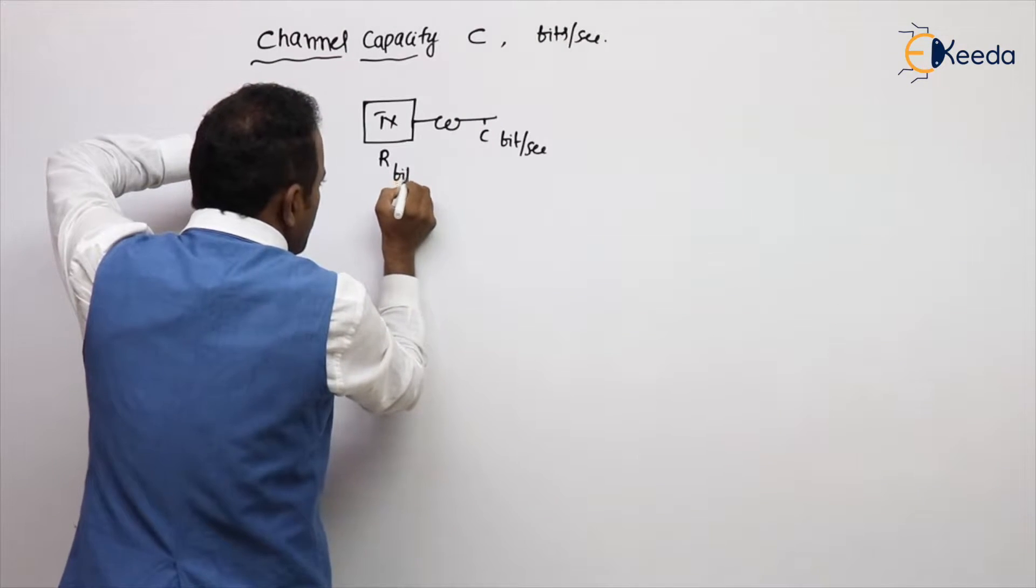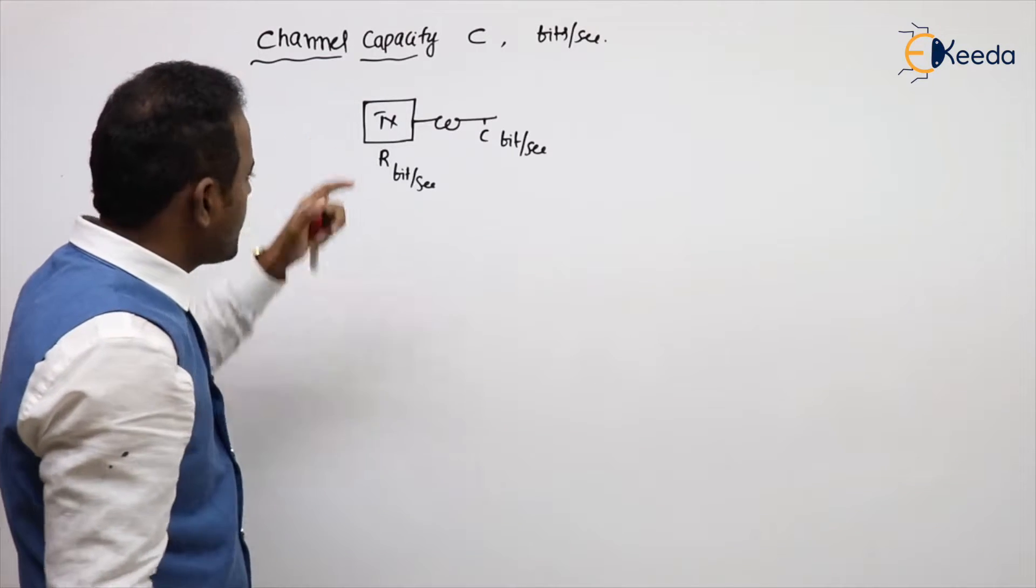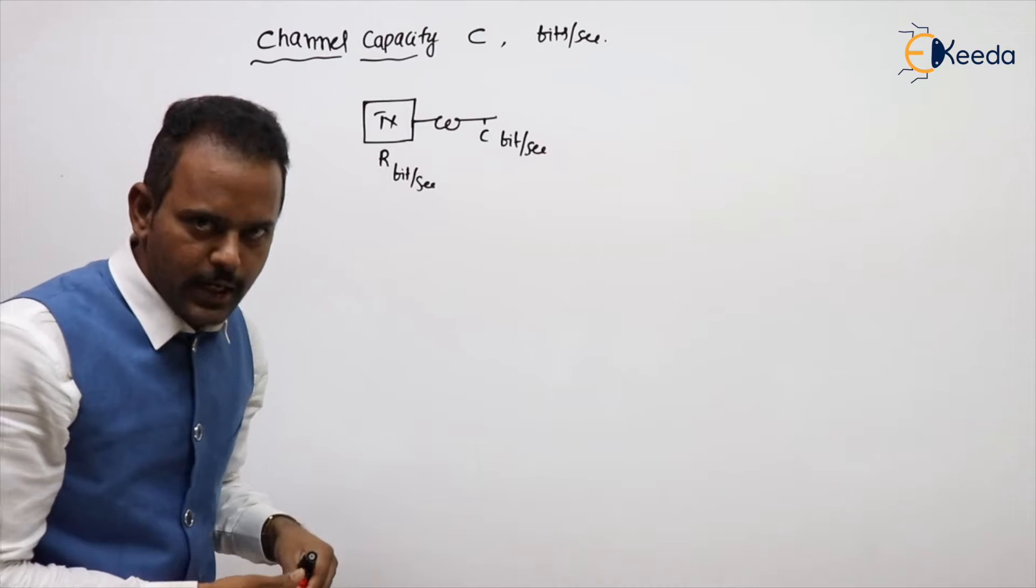This is also bit per second. So channel capacity C will give you the number of bits carried by the channel per second.